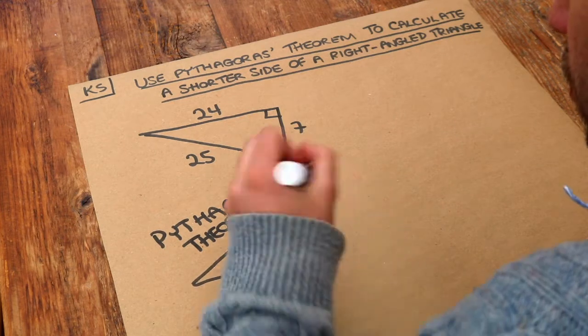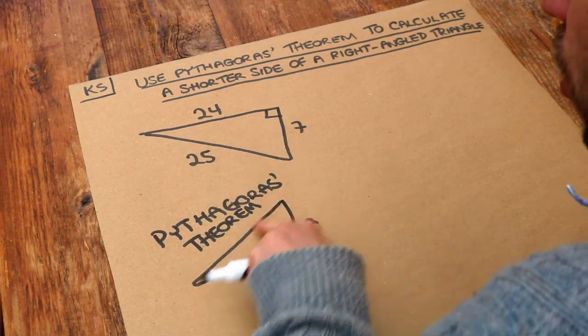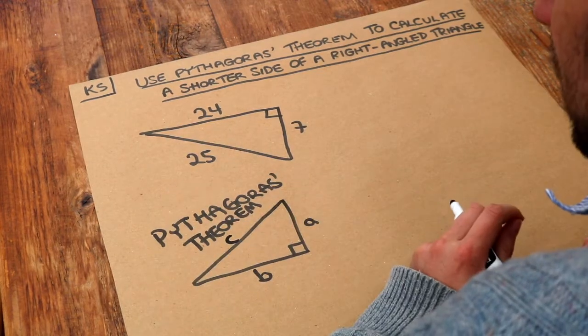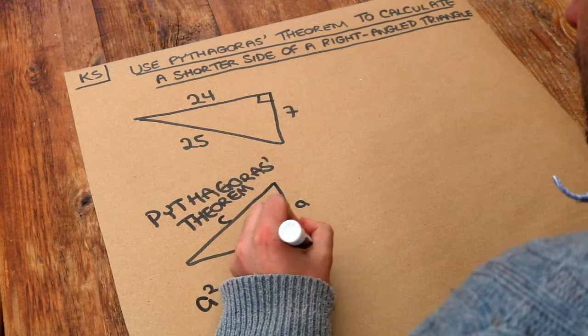If we call the two shorter sides A and B, it doesn't matter which way round, and the longest side known as the hypotenuse of the triangle is C, then Pythagoras theorem is that A squared plus B squared equals C squared.